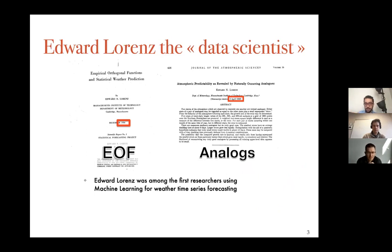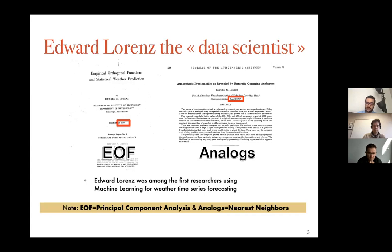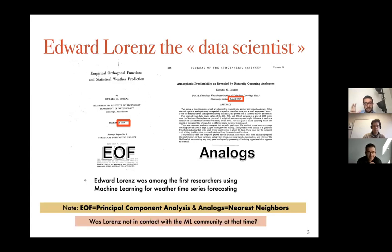Since many of you are from the signal processing community, you'll know that EOFs are just another name for principal component analysis, and analogs are just another name for nearest neighbors. I always ask: was Lorenz in contact with the ML community at that time? Every time I do a presentation I put this question — I'm still waiting for an answer.